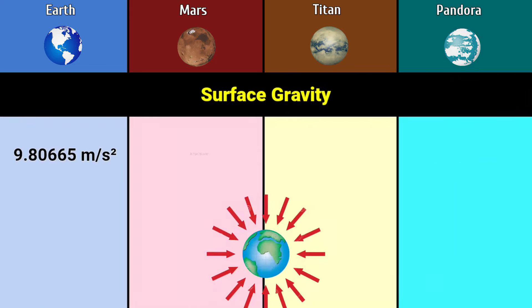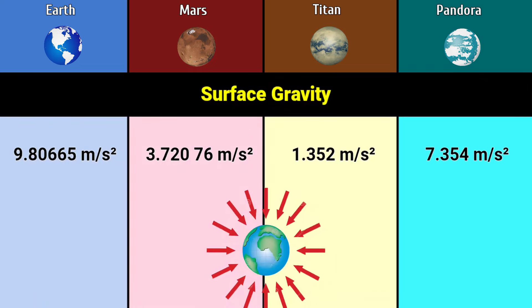Surface gravity: 9.806 meters per square second, 3.72 meters per square second, 1.352 meters per square second, 7.354 meters per square second.